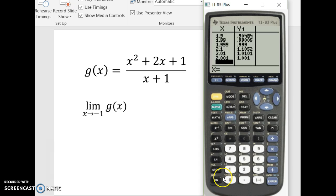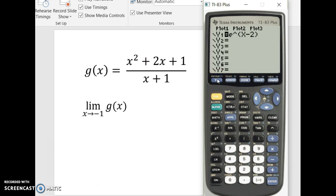So if I come to the calculator, change my function, clear it out. Okay, x squared plus 2x plus 1. Close the parentheses, divide, x plus 1. Alright, so if I graph that, it looks like it's there, doesn't it?